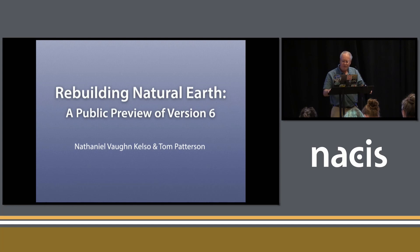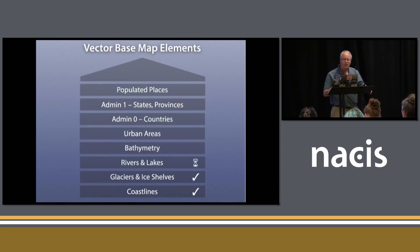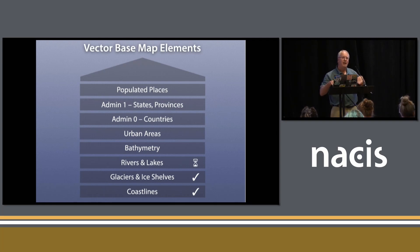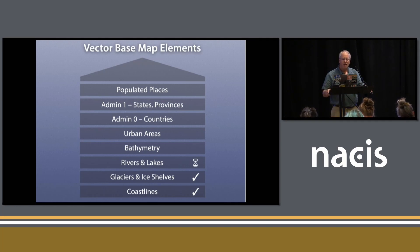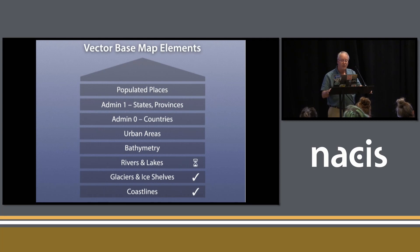We've been busy at work on it, and last year we talked about what was happening. We were rebuilding the dataset from the ground up using the analogy of a house. The first thing we did is build a coastline — it's like a foundation, and then all of the other data coverages grew up from there. Last year we had coastlines and glaciers and ice shelves complete. I was busy working on rivers and lakes at that time, and now we have a lot more stuff that's been completed.